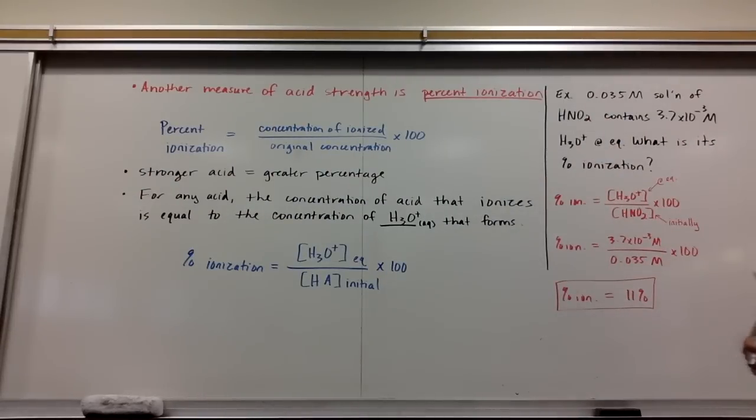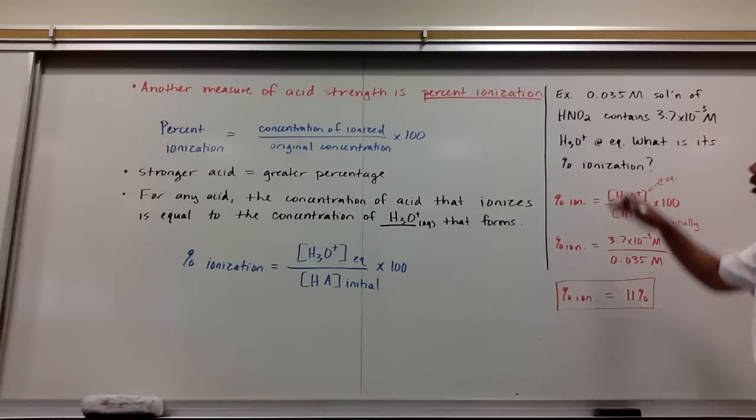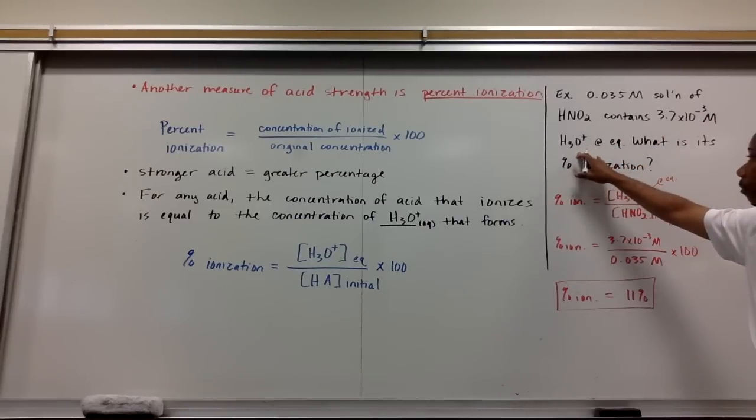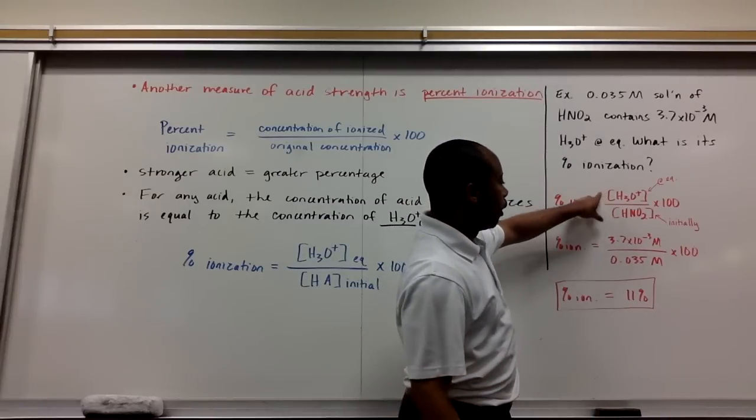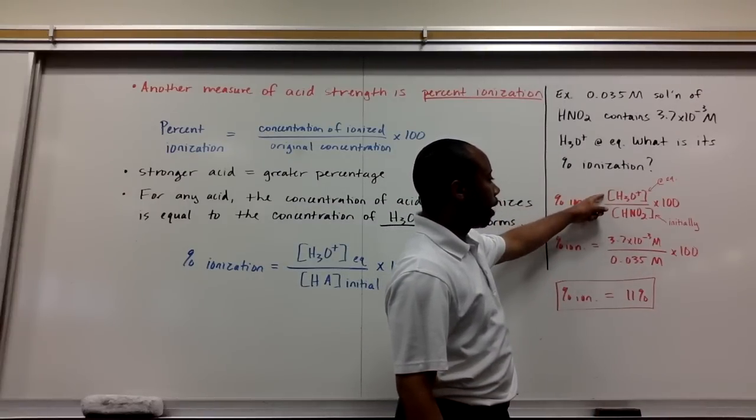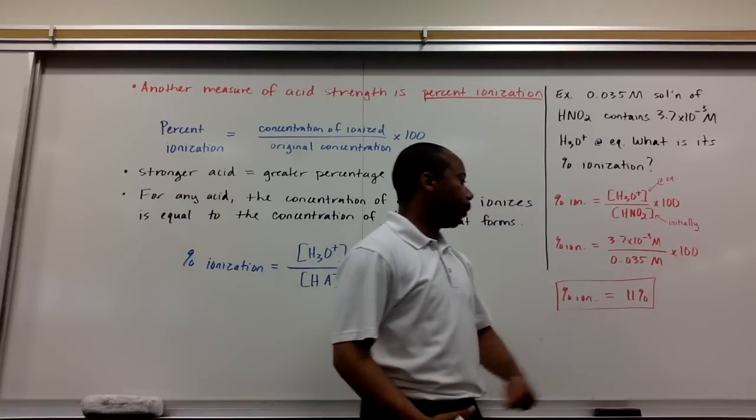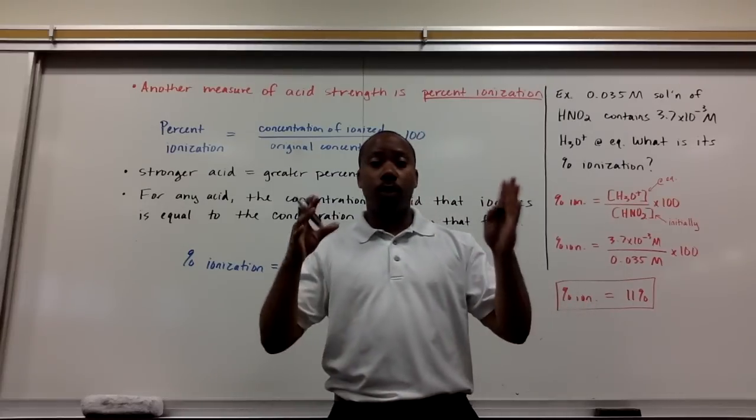An example of that. If you have a 0.035 molar solution of nitrous acid, it contains 3.7 times 10 to the negative 3rd molar H3O+ at equilibrium. So, I dissolve 0.035 molar nitrous acid in water. At equilibrium, it dissociates into 3.7 times 10 to the negative 3rd molar hydronium. What is the percent ionization? So, this one, fairly simple division problem. Here is my equation. The concentration of hydronium at equilibrium over the concentration of nitrous acid initially. Plug those values in, multiply times 100, and here we get 11%.